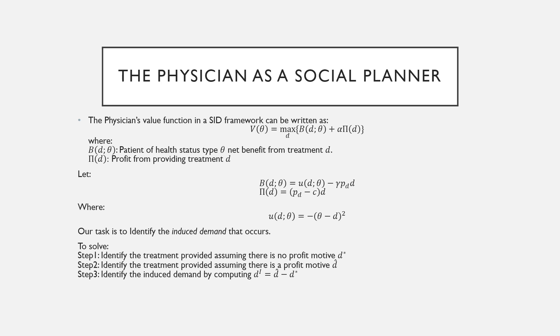Now our task here is to identify what the induced demand is and it involves three steps. First, identify the treatment provided assuming there is no profit motive, referred to as D star. Second, identify the treatment provided assuming there is a profit motive, called D hat. Third, compute the induced demand which looks at the difference between D hat and D star.